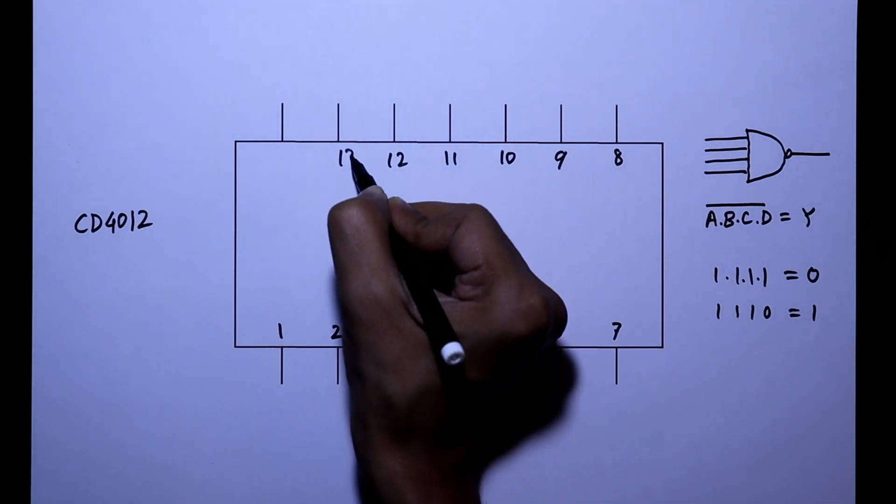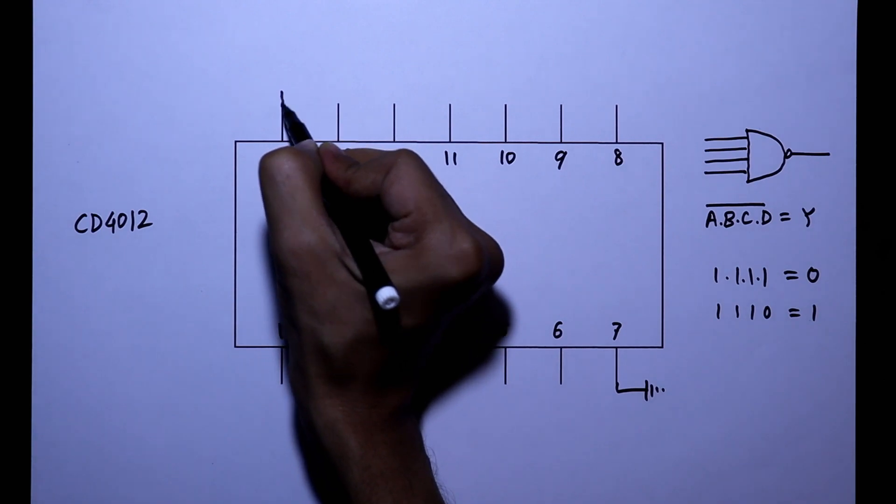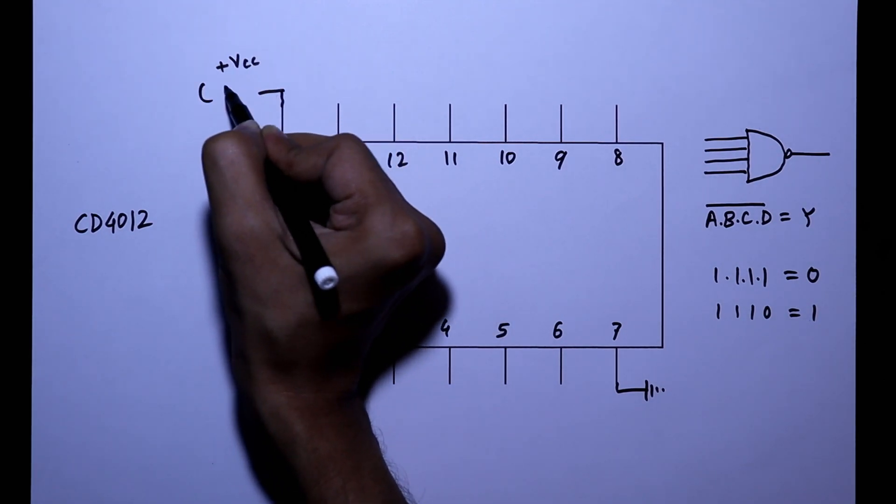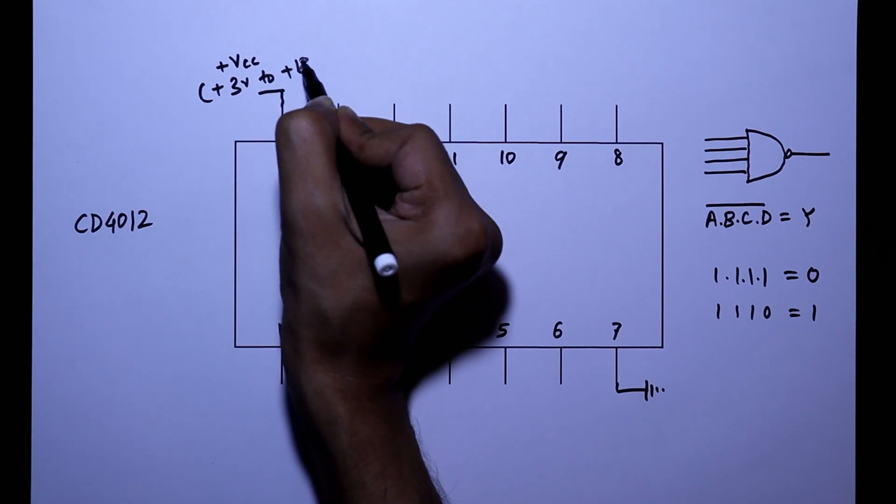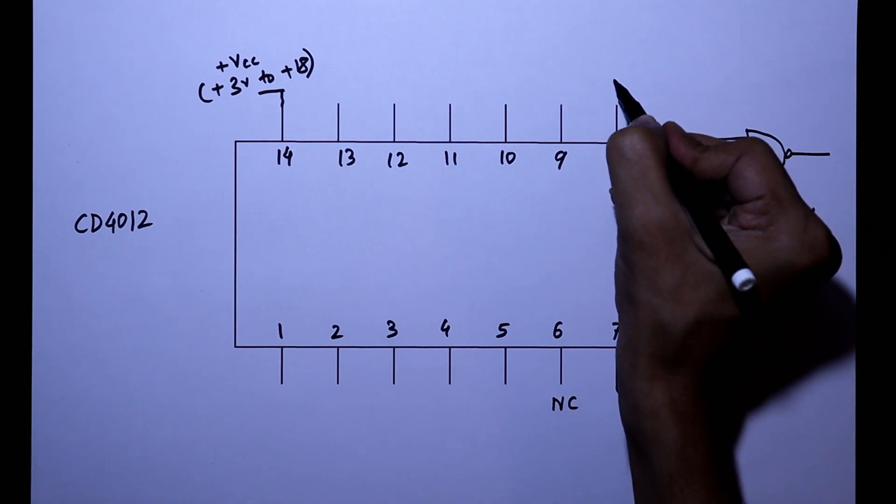It has 14 pins. Pin number 7 is ground pin, and pin number 14 is plus Vcc. We can apply from plus 3 volt to plus 18 volt.